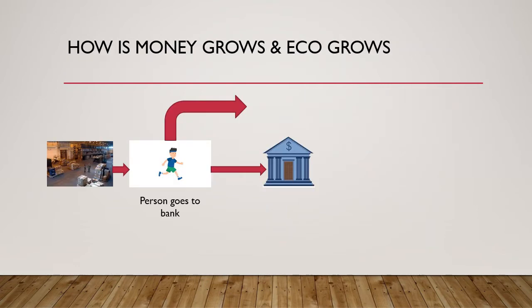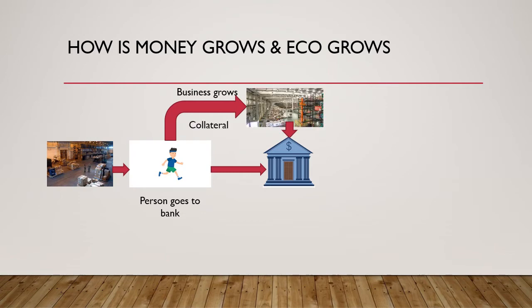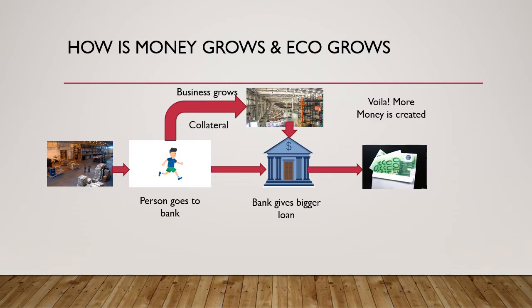Let's see how money grows in the system. The person who is taking the loan from the bank invests in his business and his business luckily grows. Now the person sees future demand and he approaches the bank for more loan. Since the business has already grown and the person has a bigger collateral to offer, the bank gives him a bigger loan and voila, more money is created in the economy.